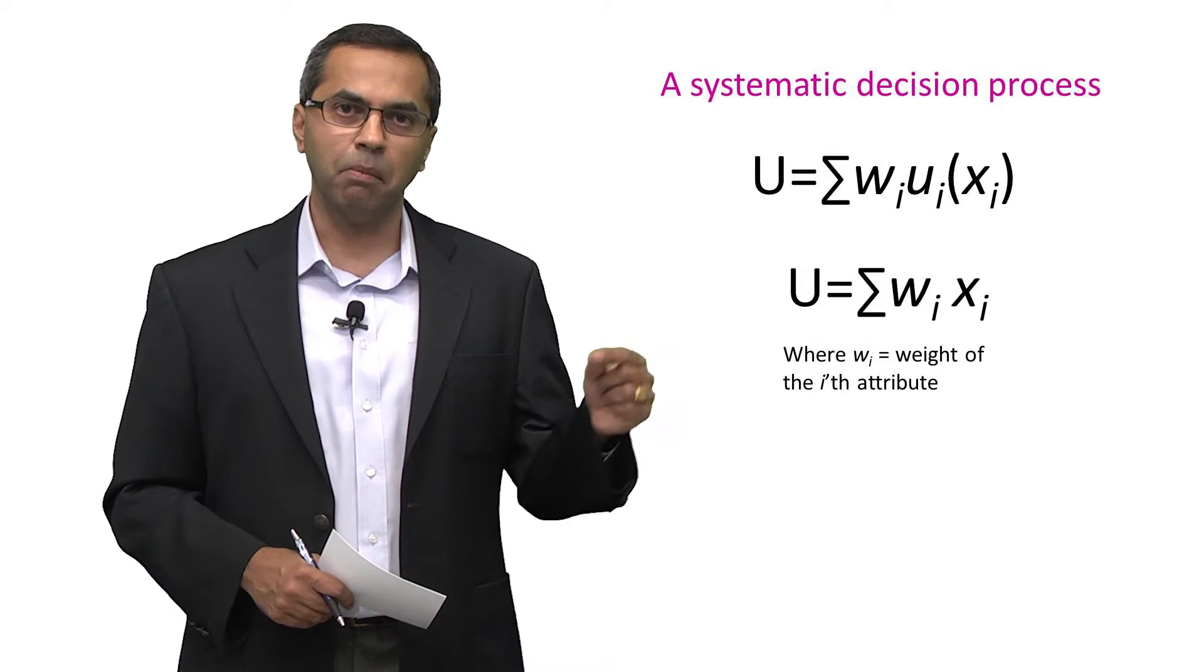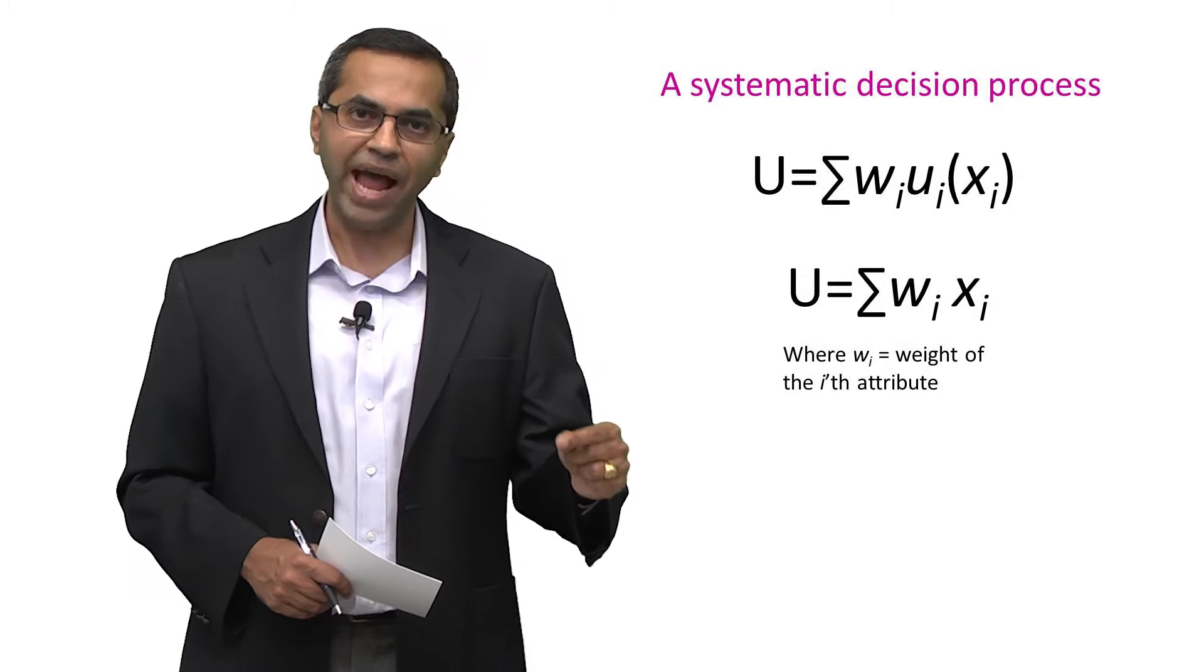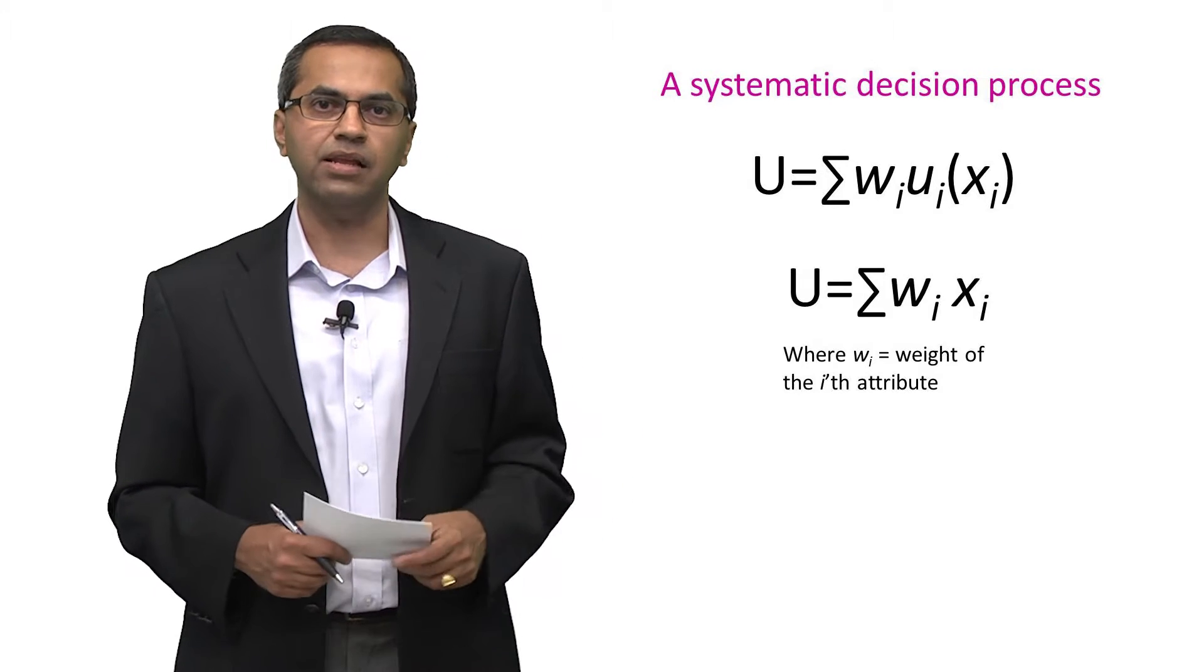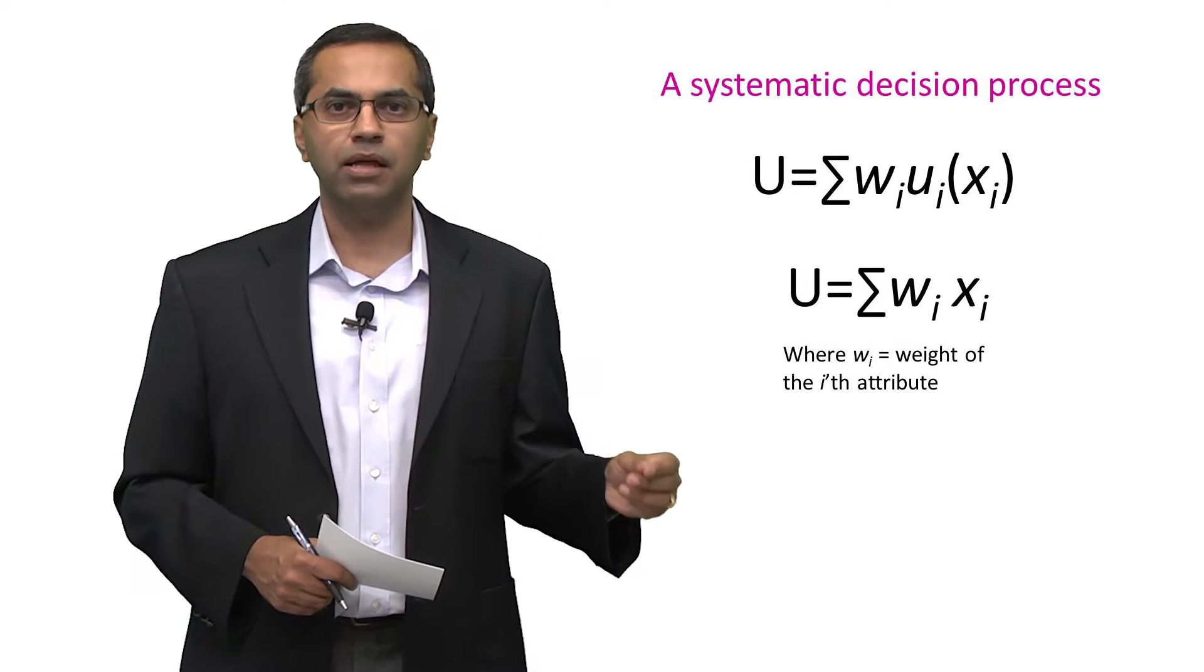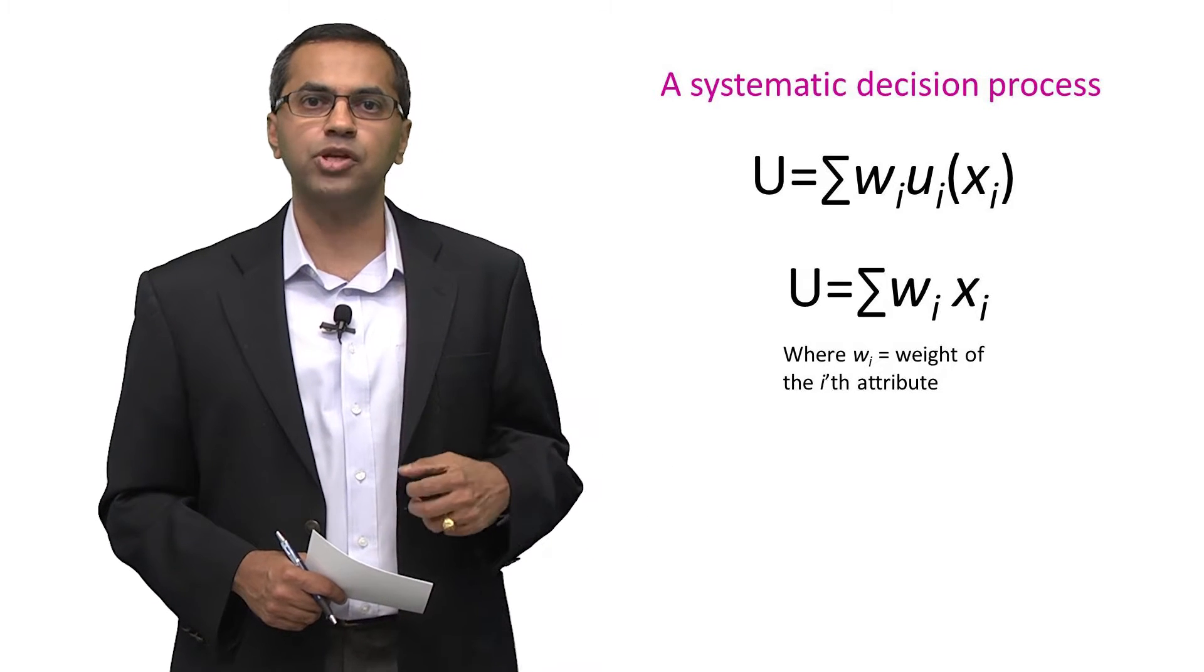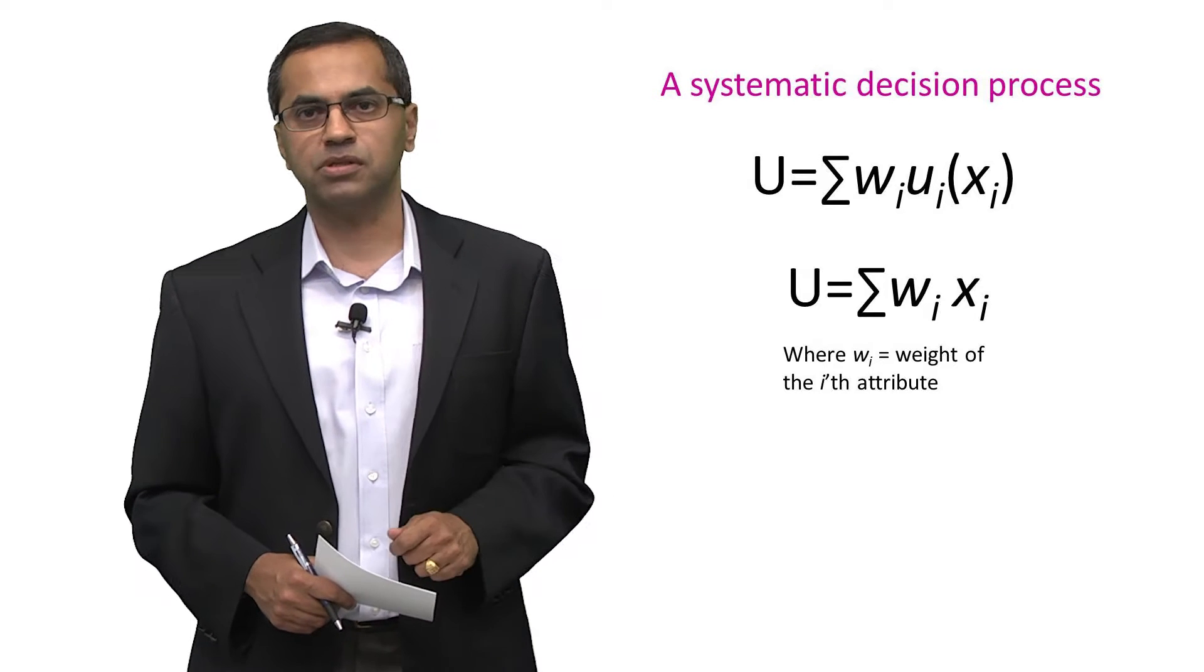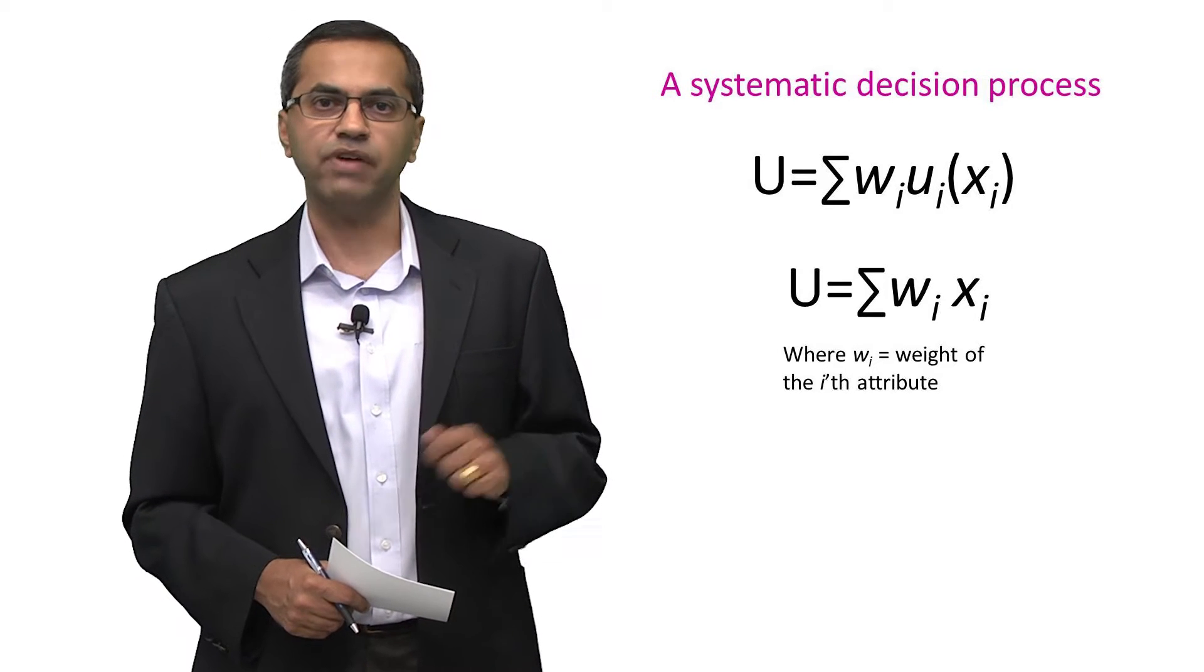Then they need to come up with an importance weighting for each attribute, evaluate each attribute on a scale, multiply the weight by the value, add up the total to give them the utility or value of every option, and then pick the option that provides the highest value. This is a fairly complex process. Most of us don't engage in that process for every single decision we make.